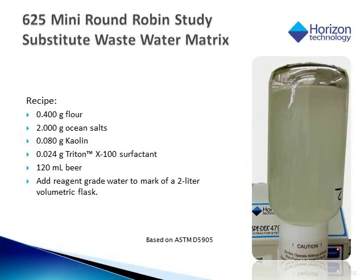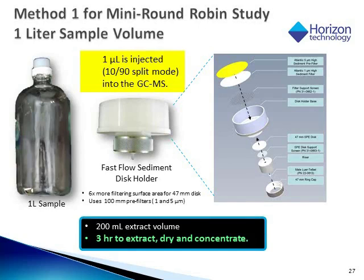In the mini round robin study conducted by the ILI, a standard wastewater matrix was selected for participants to analyze — the substitute wastewater matrix from ASTM consisting of flour, ocean salts, kaolin, dried Nextl 100, and beer. A 1-liter sample was extracted using a fast-flow cinnamon disc holder, now called the easy-flow disc holder, which provides six times more filtering surface for the 47-millimeter disc, using 100-millimeter pre-filters at both 1 and 5 micron combined. The extraction volume is 200 milliliters and the time to extract, dry, and concentrate the sample is three hours.